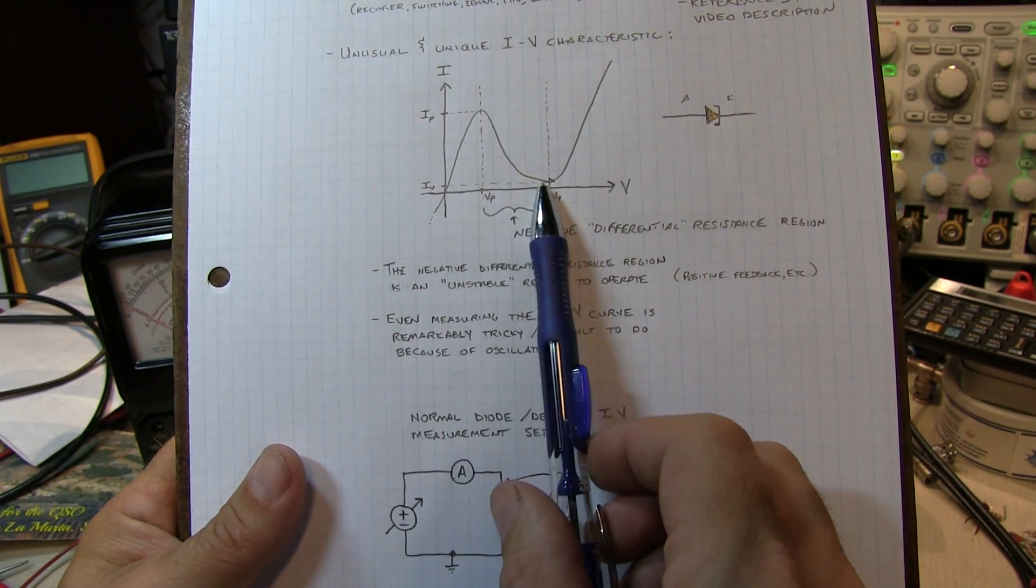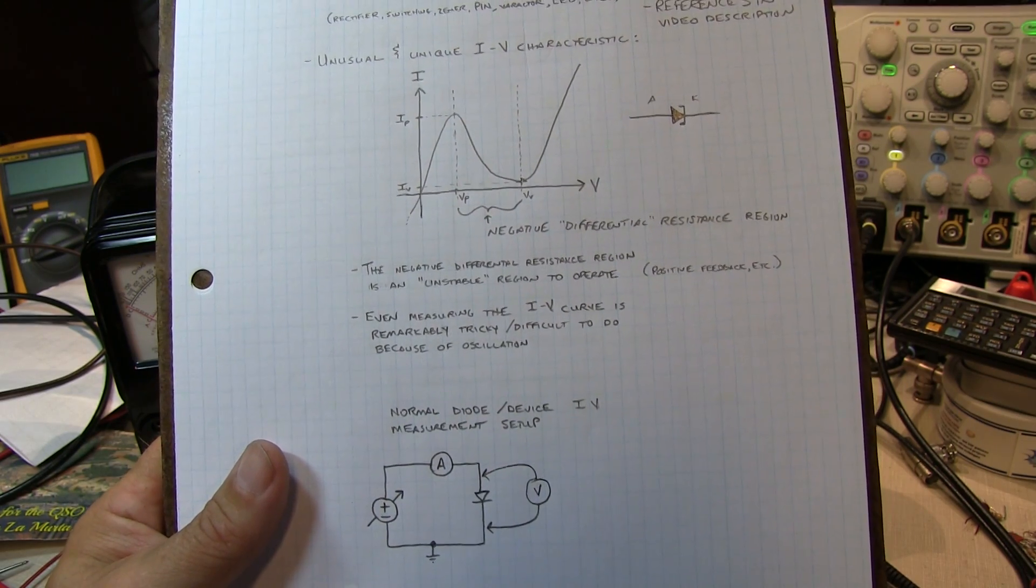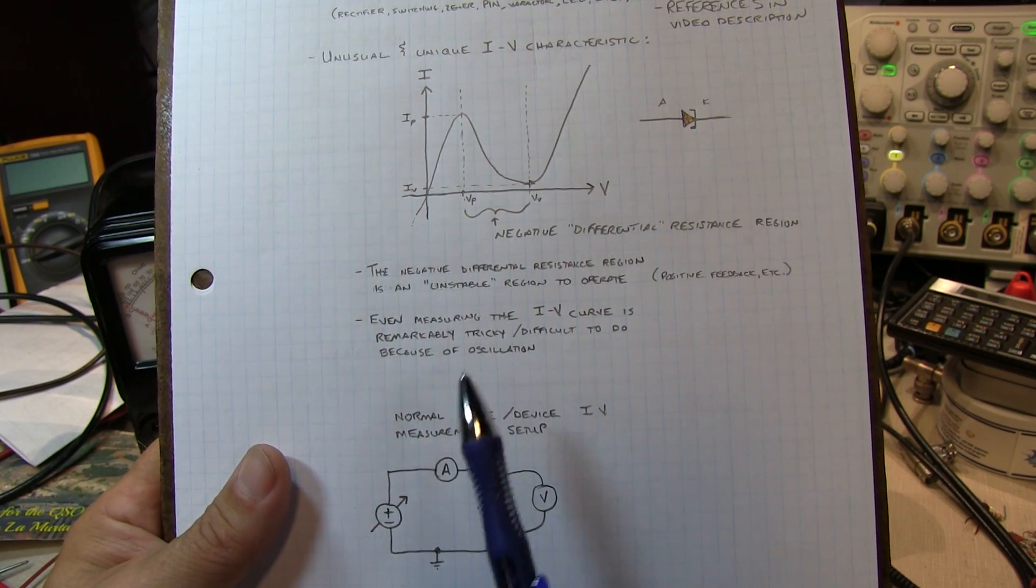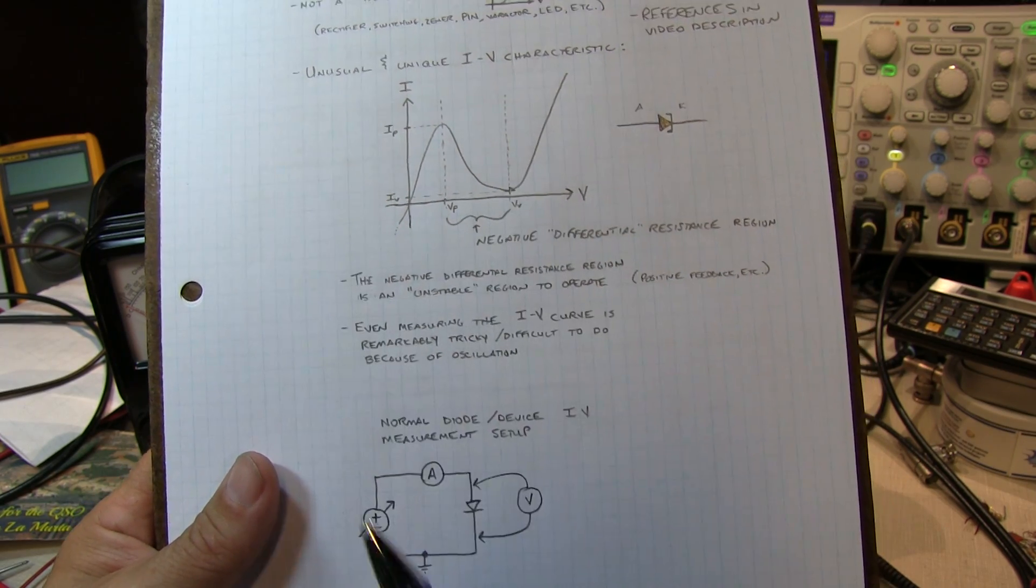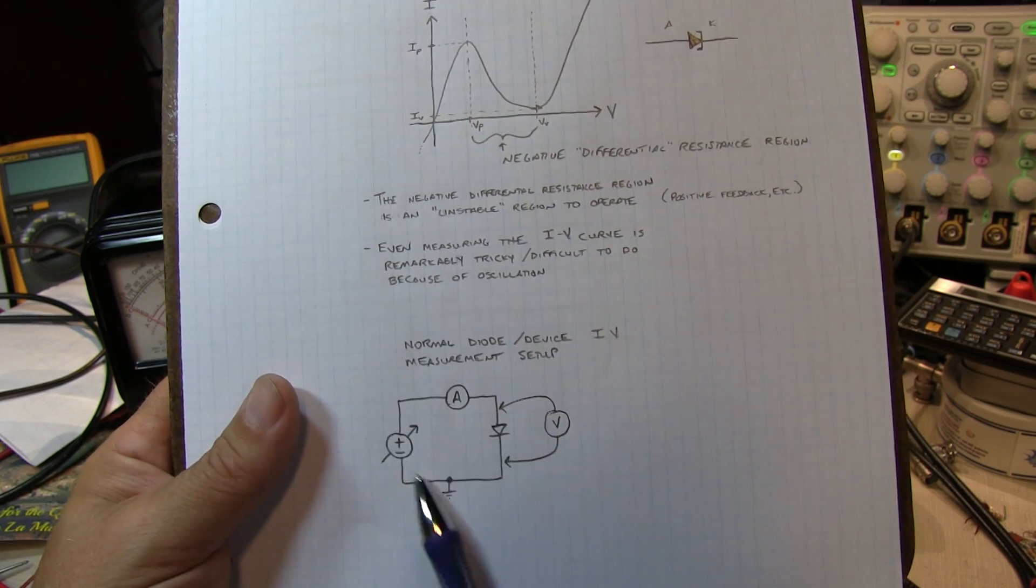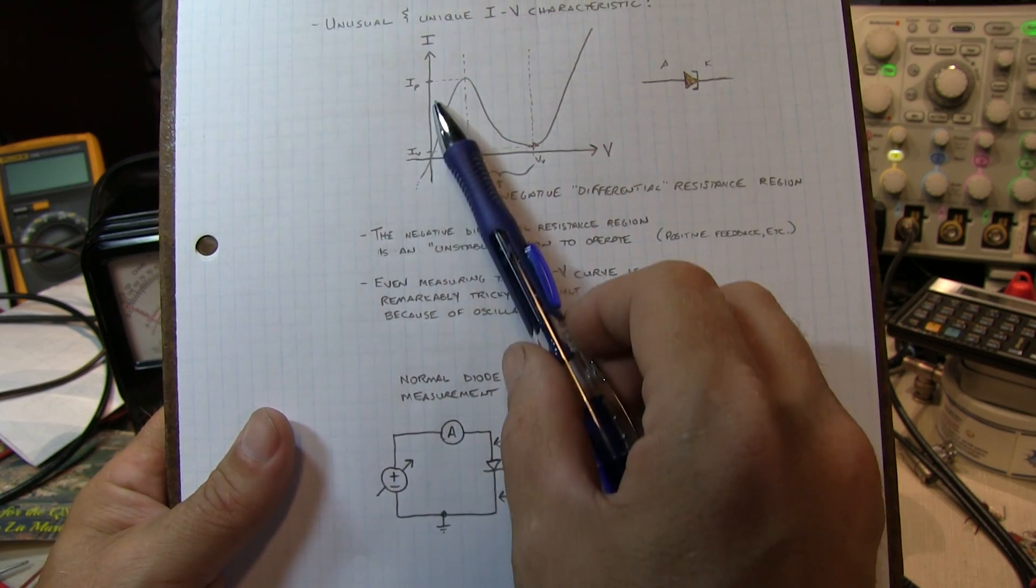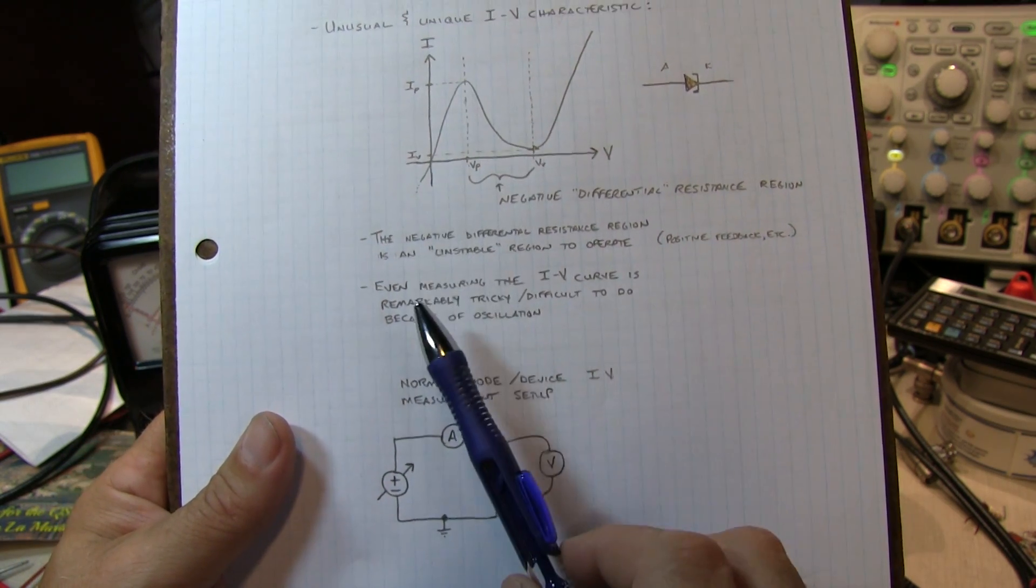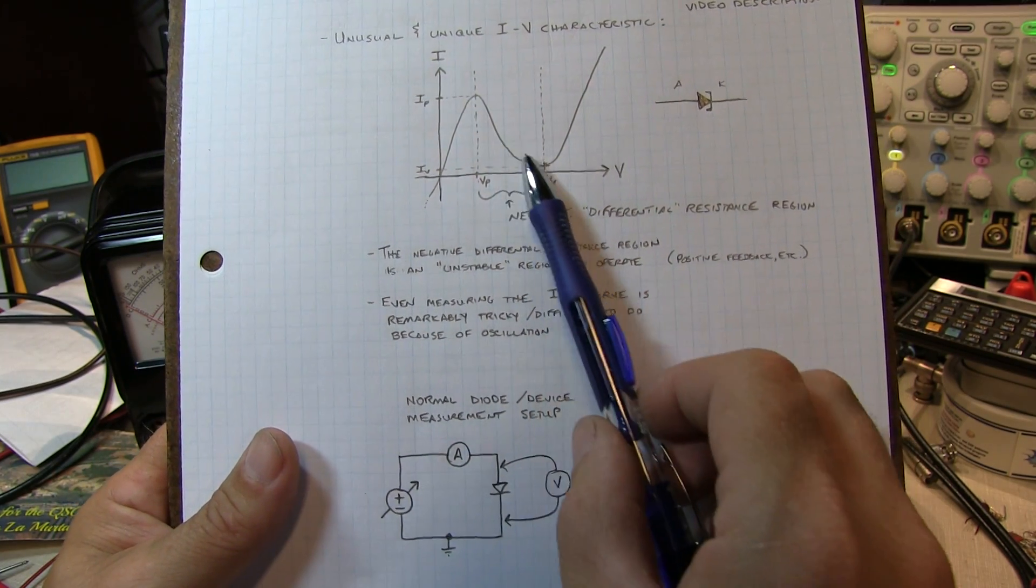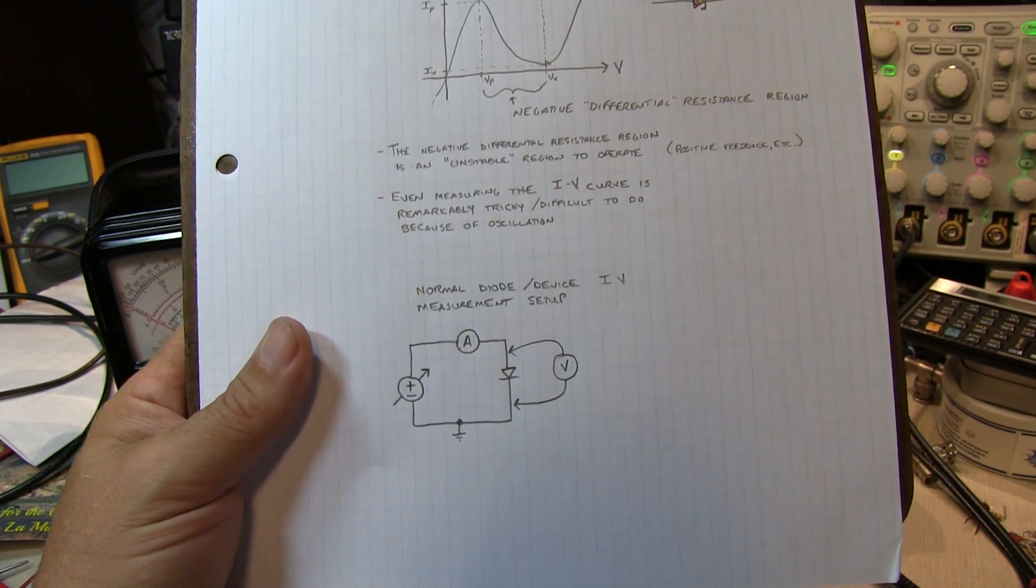This negative differential resistance, or NDR, region of the diode makes it even very tricky, remarkably tricky, in fact notoriously tricky and difficult to measure the IV characteristic, because the diode will tend to oscillate when you hook it up in just a normal kind of IV curve tracer type configuration. So you can still kind of get a measure of where the peak current is and where the valley current is, but in this region you may not get exactly this shape because of the oscillation.